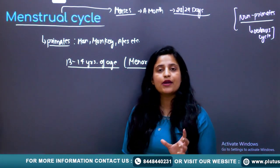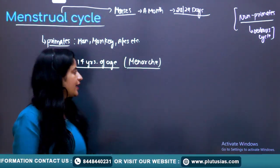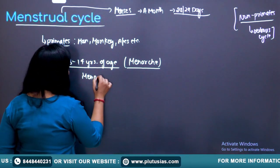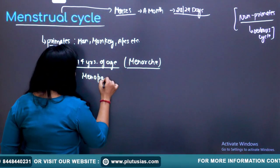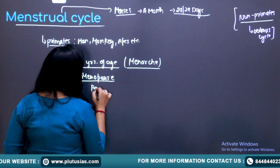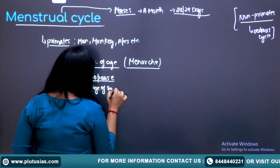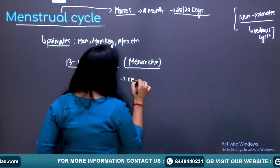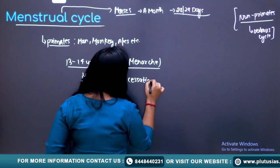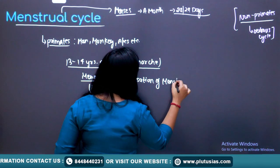The phase where the menstrual cycle is stopped is known as menopause, which happens at around the age of 50. Menopause is nothing but the cessation of the menstrual cycle.